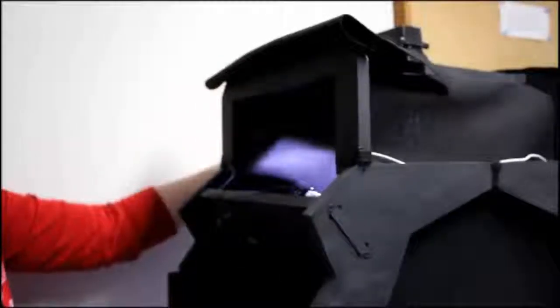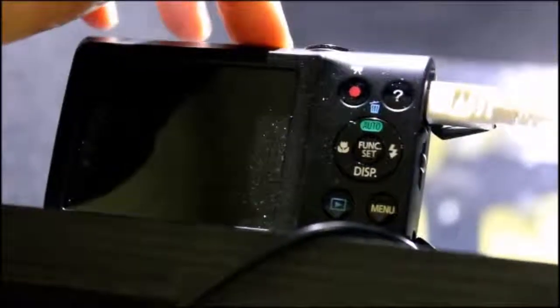Lift the black felt flaps on the side of the scanner to access the camera. Press the on off button on the top of the camera to turn the camera on.